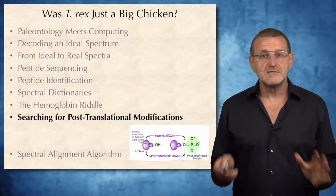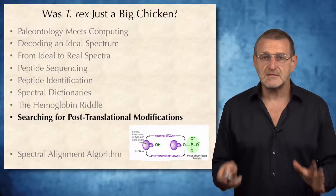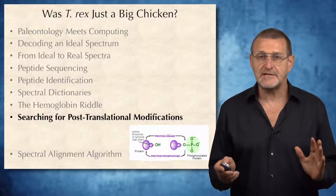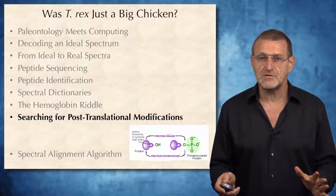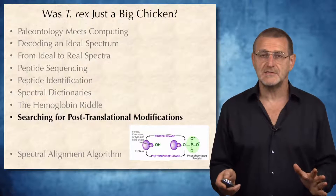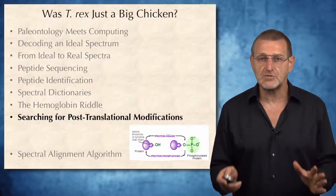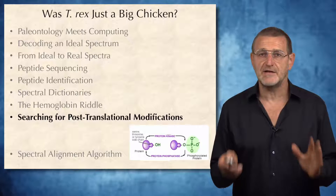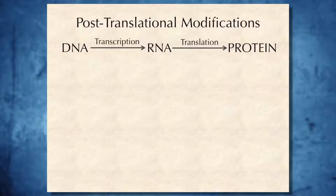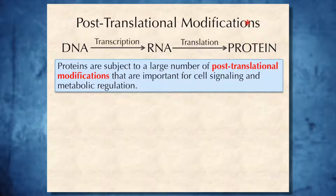It turned out that most prolins in the T-rex peptides identified by Azara were actually modified versions of prolins called hydroxyprolins. In this segment, we will talk about searches for post-translationally modified peptides. The central dogma doesn't mention it, but many proteins are subject to a large number of post-translational modifications that are important for cell signaling and metabolic regulation.